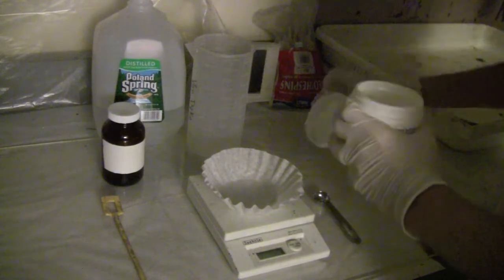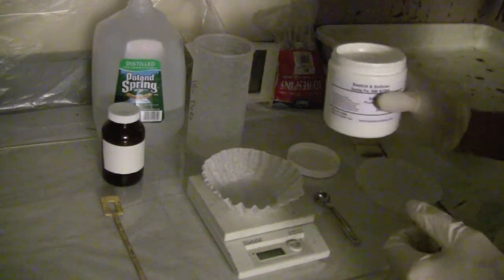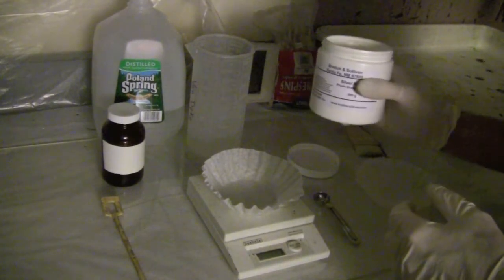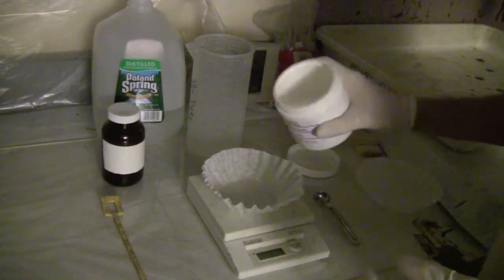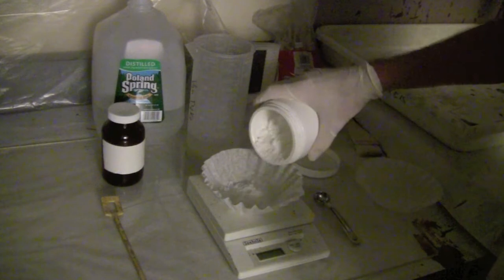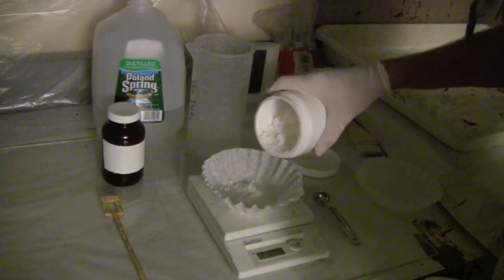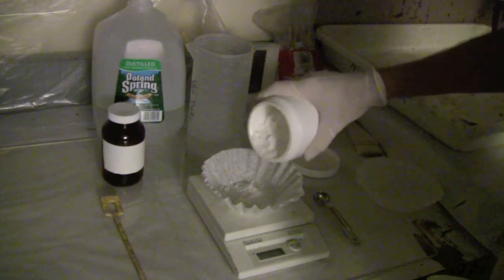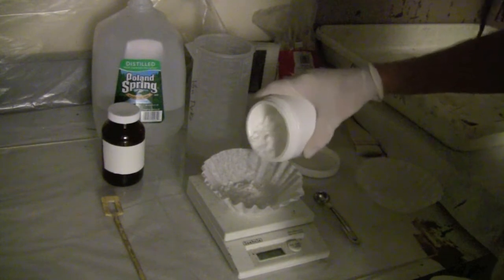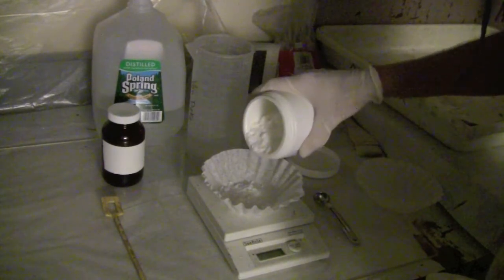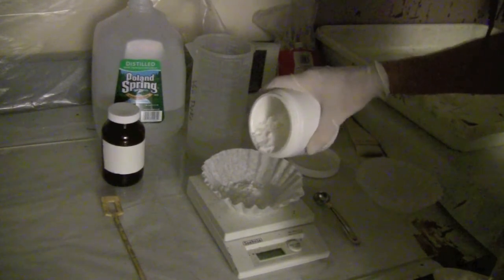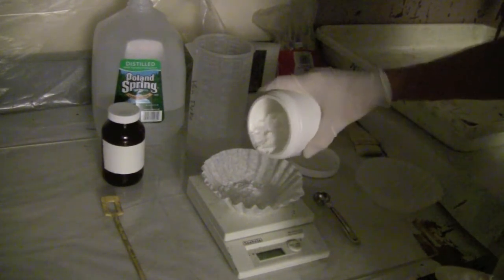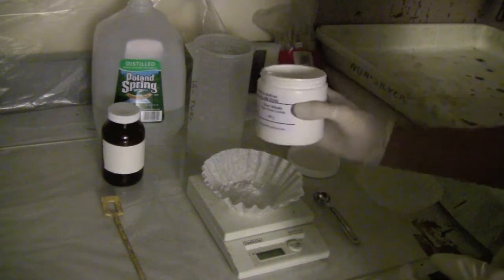Now that this is zeroed out and turned on, we're going to start adding. Because it's a 12% silver nitrate solution and we're making 250 milliliters, we need 30 grams of silver nitrate. So there's 26, 28, 29, and there's 30.